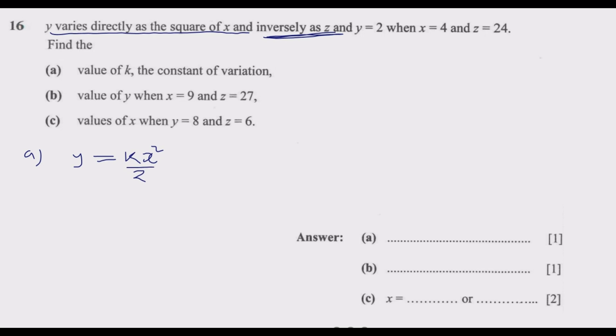Inversely means when Y increases, Z should reduce, or when Z reduces, Y should increase. That's what inversely means. So now we know this is the generic formula. But we are told that Y equals 2 when X equals 4 and Z equals 24.